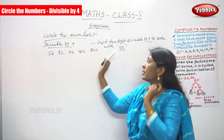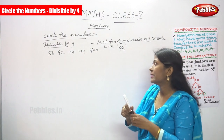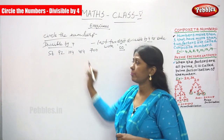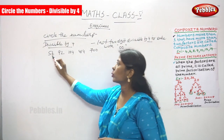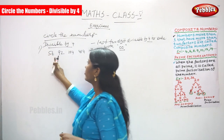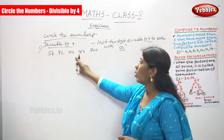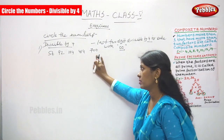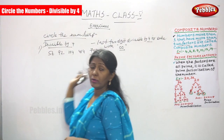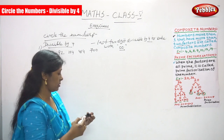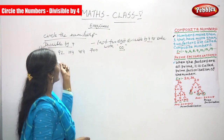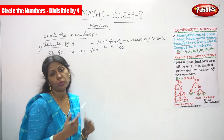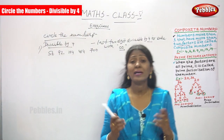Circle the numbers. You can write numbers also. The first question gives numbers: 56, 92, 104, 414, and 700. We are going to find out which numbers are divisible by 4, and you have to circle them.